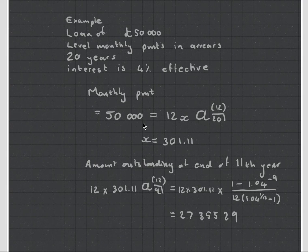We take this and we divide it by the £50,000 and that gives us our monthly payment. Now we can use the retrospective method to calculate the amount outstanding at the end of the 11th year.